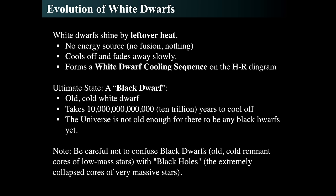Eventually white dwarfs just get dimmer and dimmer. The eventual state for a lone, isolated, old white dwarf is called a black dwarf. A black dwarf will take trillions — tens of trillions — of years to form, and the universe is only 13.6 billion years old. So it's not old enough for any black dwarfs to exist yet. These would only happen in the deep future of the universe.